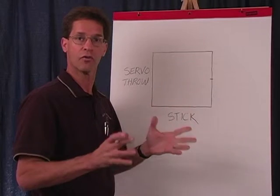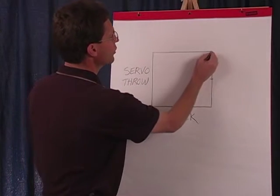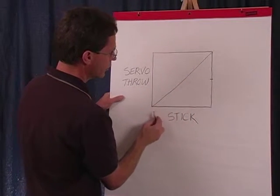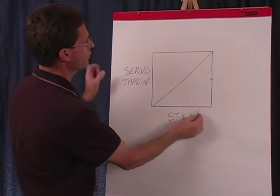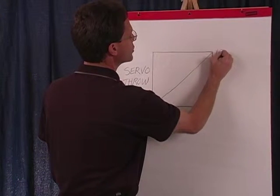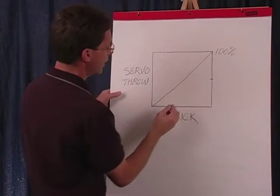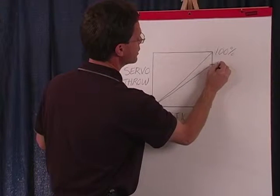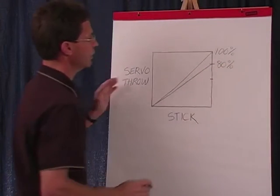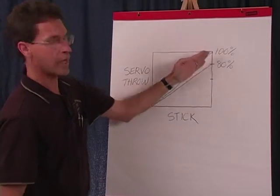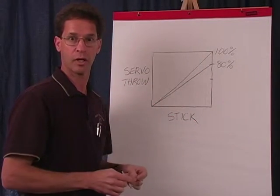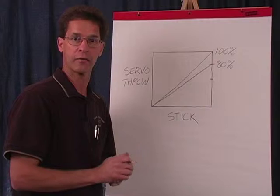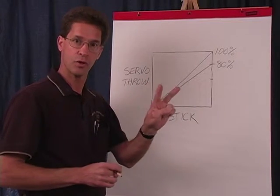For dual rate, if we run a hundred percent throw, that's just a linear line — here's stick movement and here's servo throw. So this would be a hundred percent. If we use dual rate to cut down the throw, say eighty percent dual rate, we're simply cutting down the total throw that goes into the swash plate. We can add exponential on top of the dual rate. In the DX6, it does that through two menus.